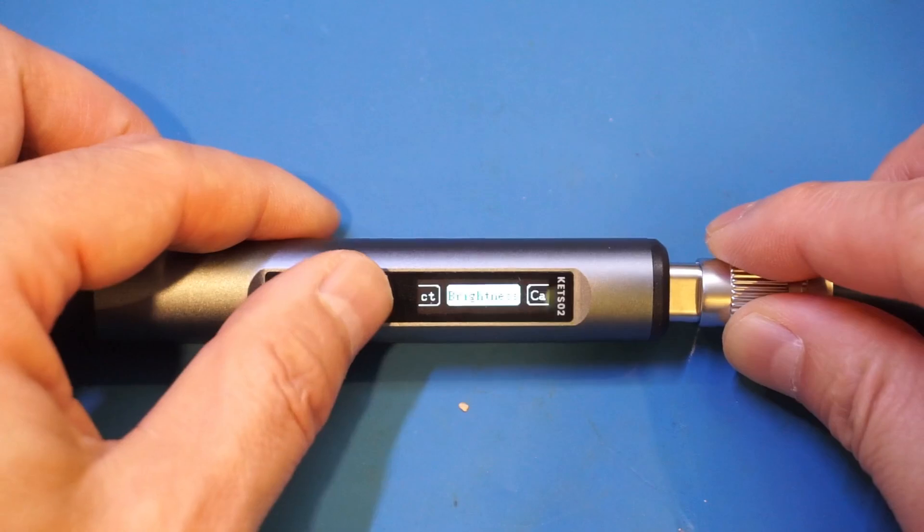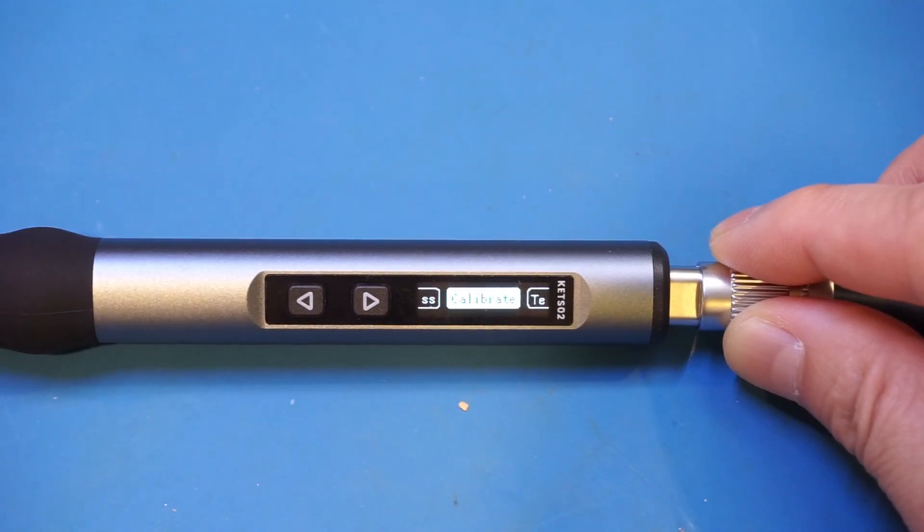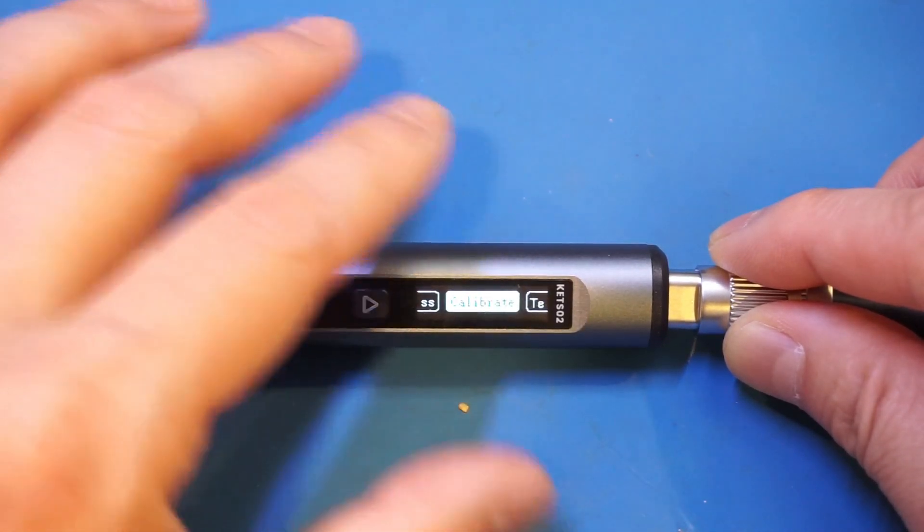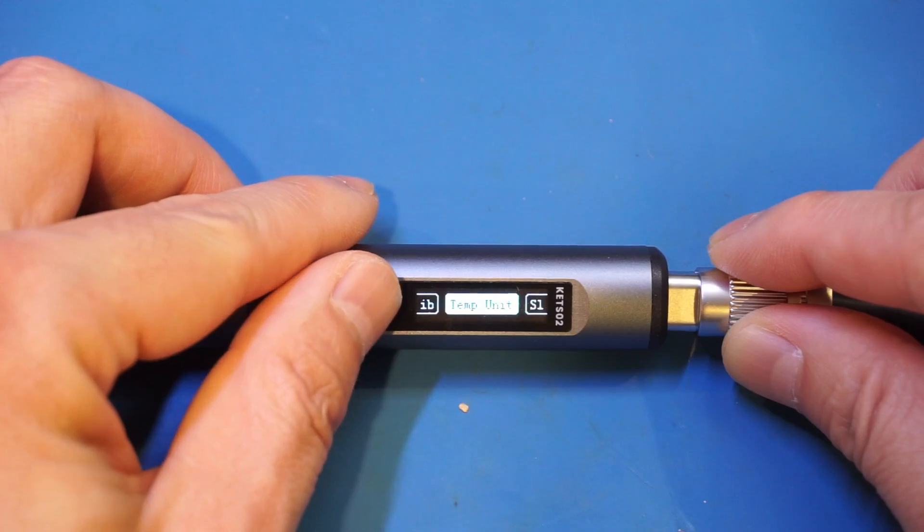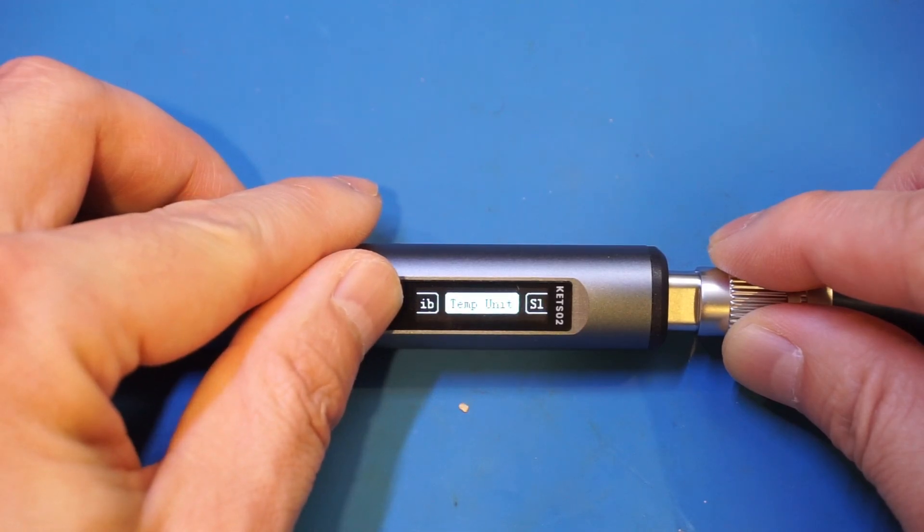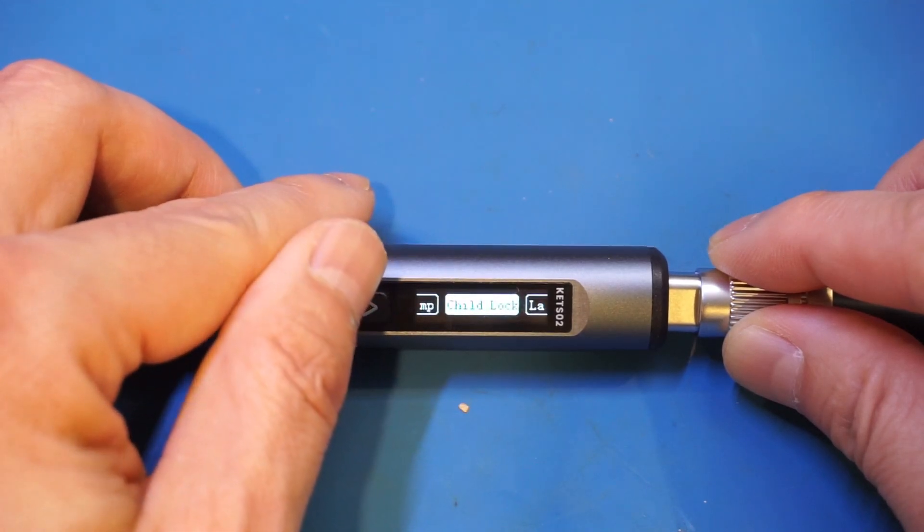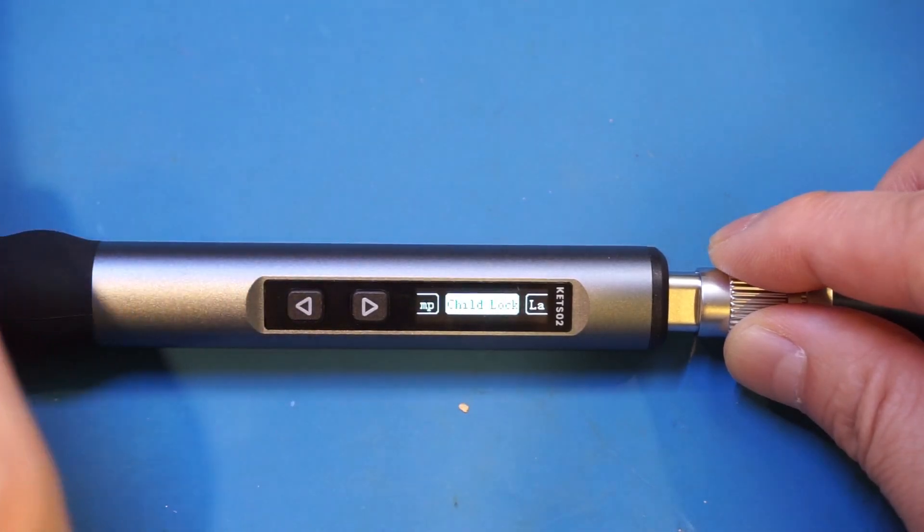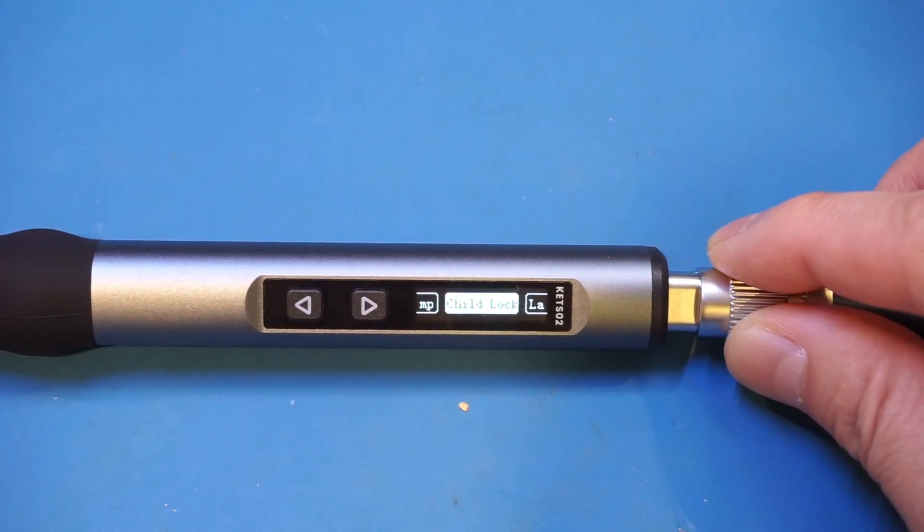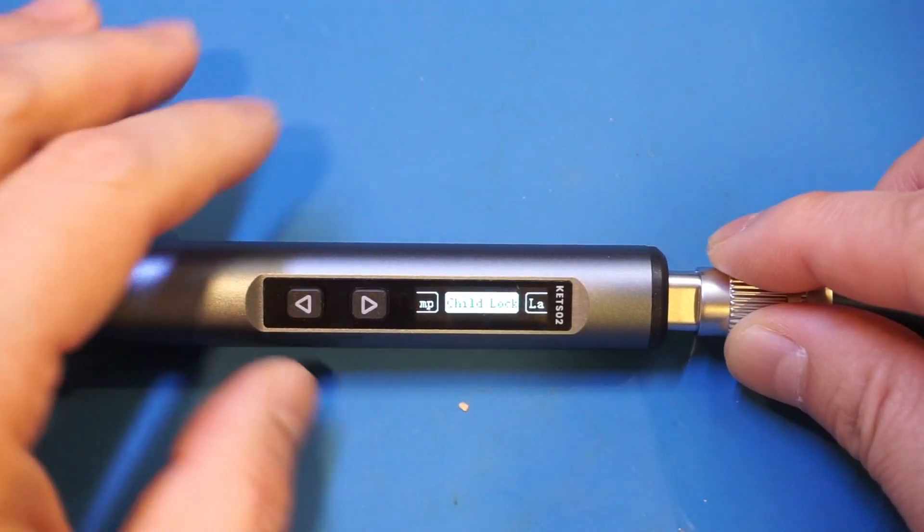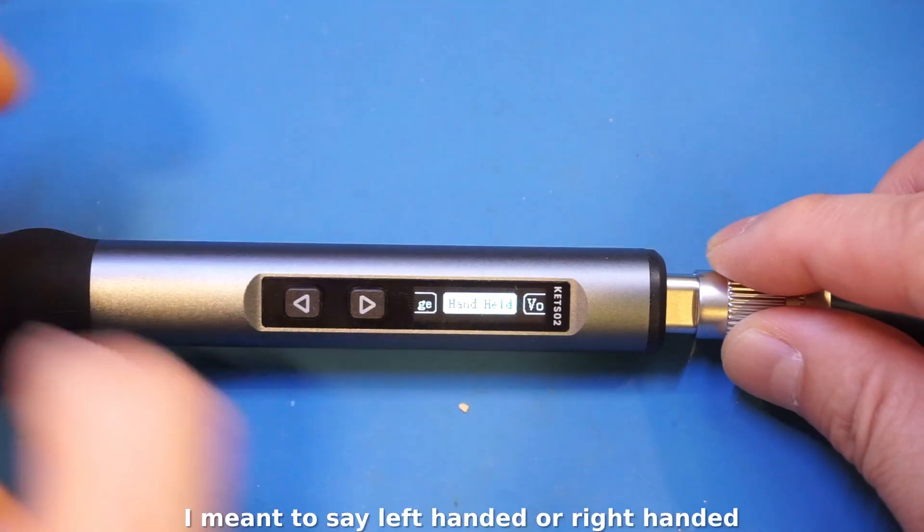Next we can calibrate - the idea here is if you have an accurate source, you can measure the temperature of the tip and store some offset in the setting here to compensate the actual temperature. Temperature unit you can set to Celsius or Fahrenheit. Sleep time, sleep temperature, child lock - the idea of the child lock is to prevent your kids from accidentally powering it on. I think when it's enabled you have to press the key three times in order to power on the soldering iron.